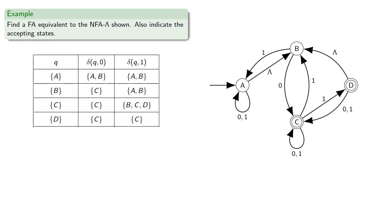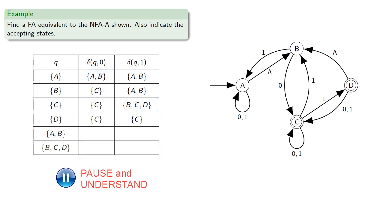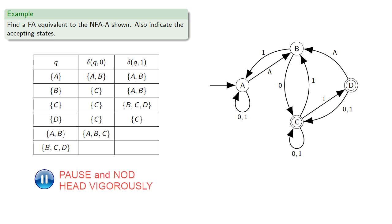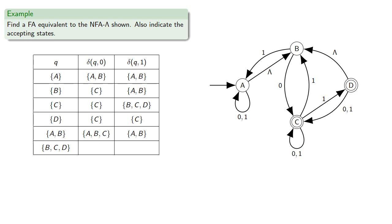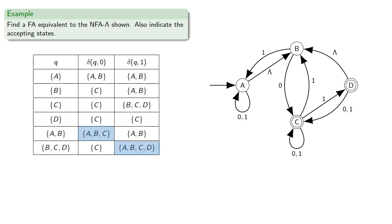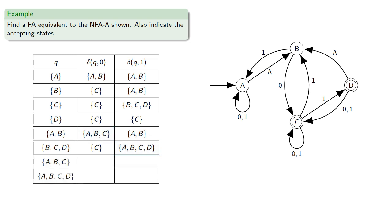Notice that we've introduced two new destination states: the subset {A, B} and the subset {B, C, D}. If you're at {A, B} and receive a 0, then from A you might go to A or B, and from B a 0 takes you to C. If you receive a 1 from {A, B}, from A you go to A or B, and from B you also go to A or B. For {B, C, D}, a 0 and a 1 will take you to their respective sets. This introduces two more subsets: {A, B, C} and {A, B, C, D}.